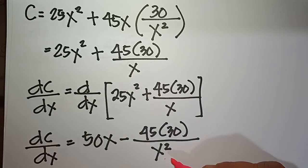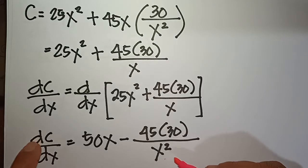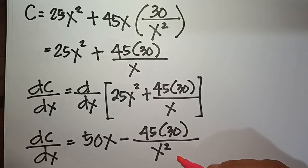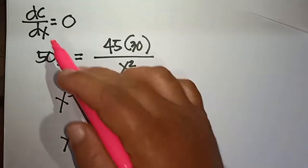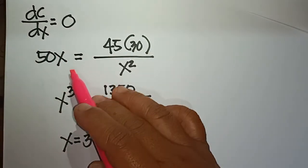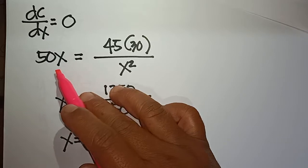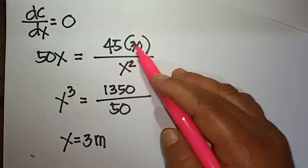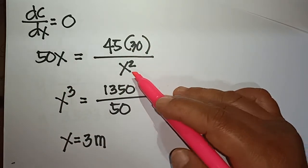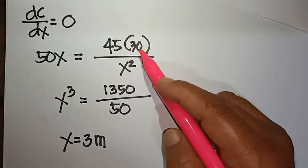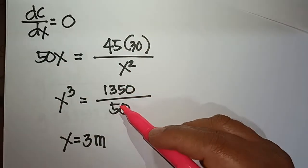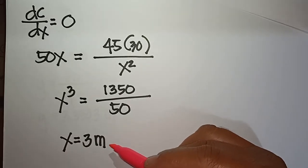Setting the first derivative equal to zero to find the minimum: dc/dx equals 0. Transposing gives 50x equals 45 times 30 over x squared. Cross-multiplying x times x squared gives x cubed equals 1350 over 50. Therefore x equals 3 meters.